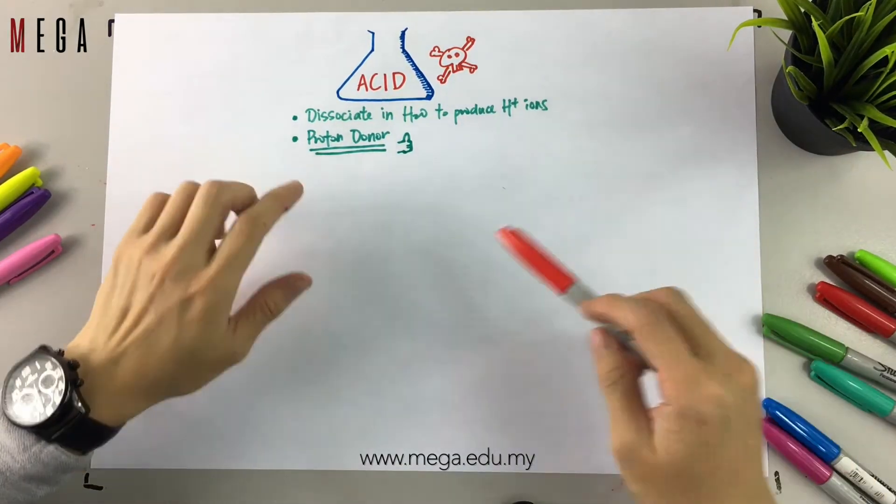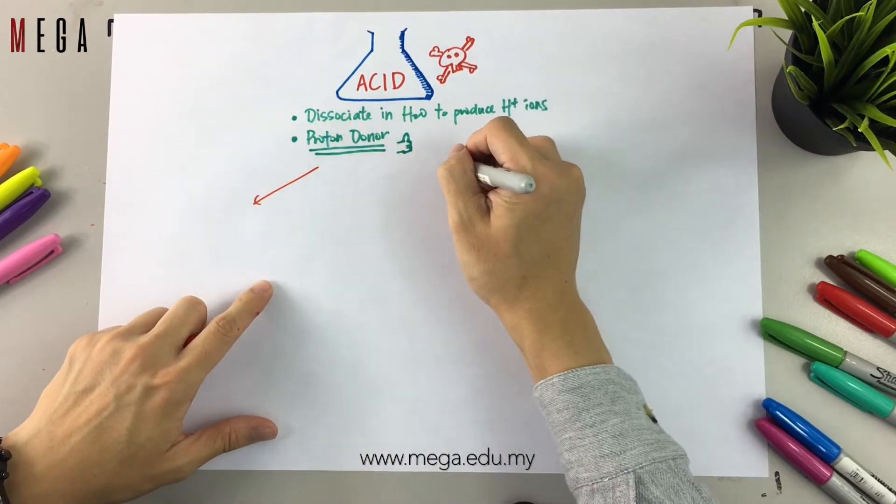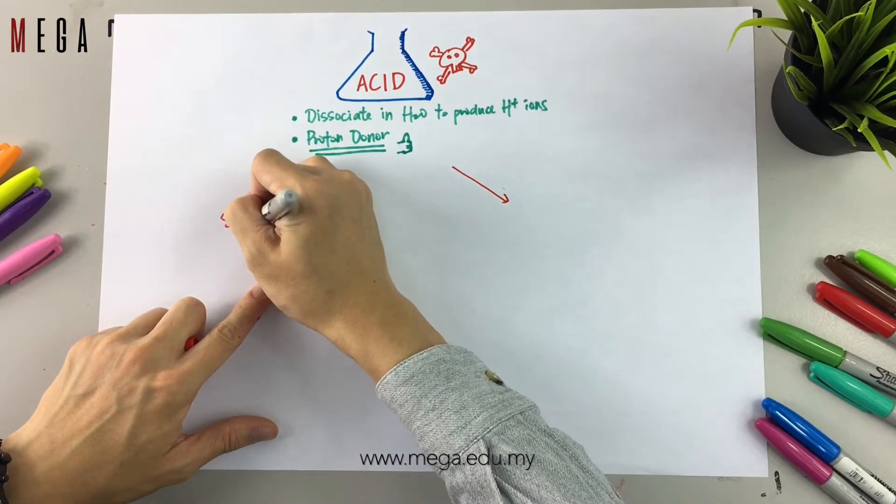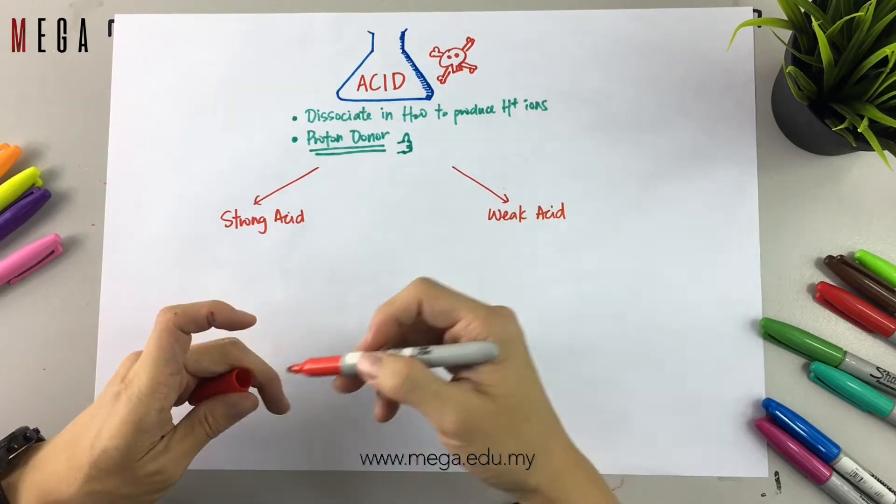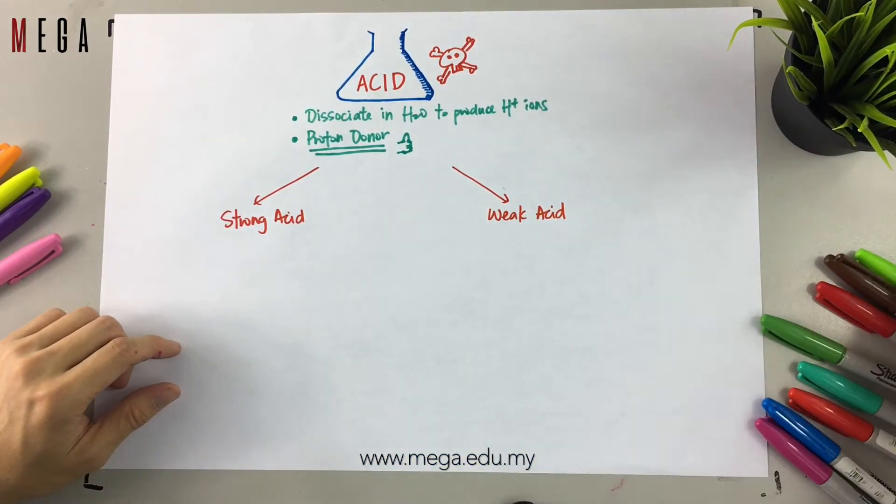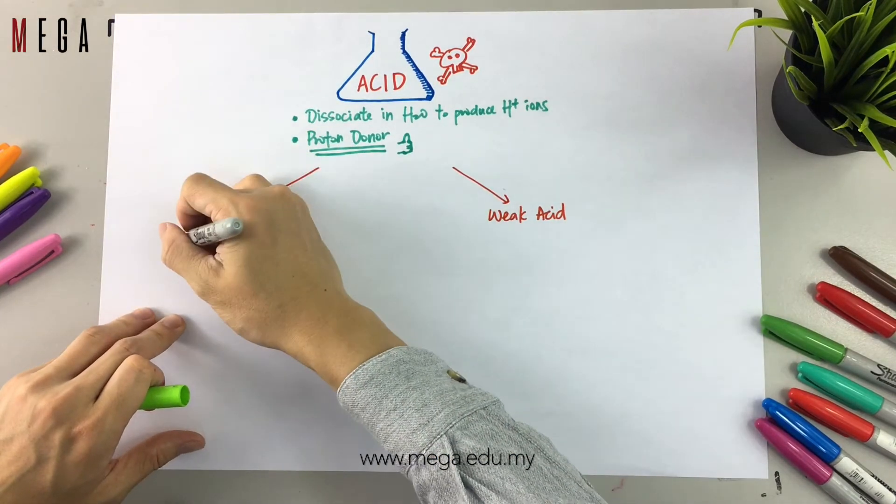Next, in acid, you need to know about two types of acid. They are strong acid and weak acid. The definitions for both acids are very important.